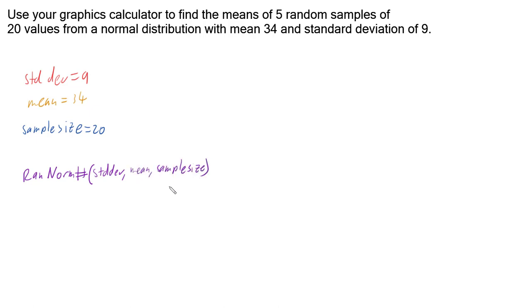So in our calculator we're going to have RANNORM and we're going to put in our standard deviation of 9, followed by our mean of 34, followed by our sample size of 20. And we should get a list of 20 numbers that are random and normally distributed.